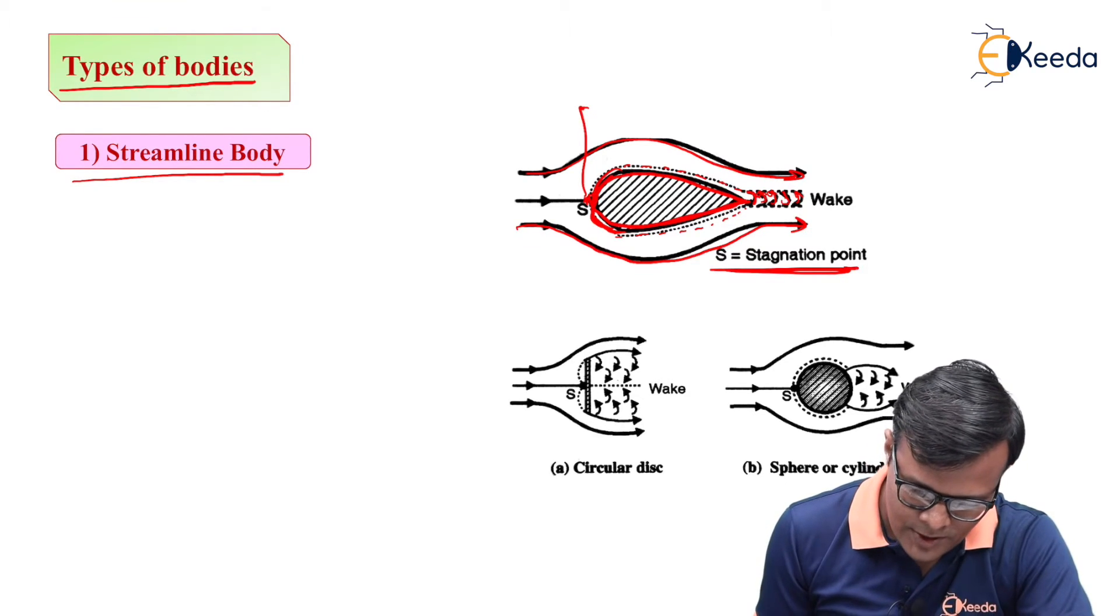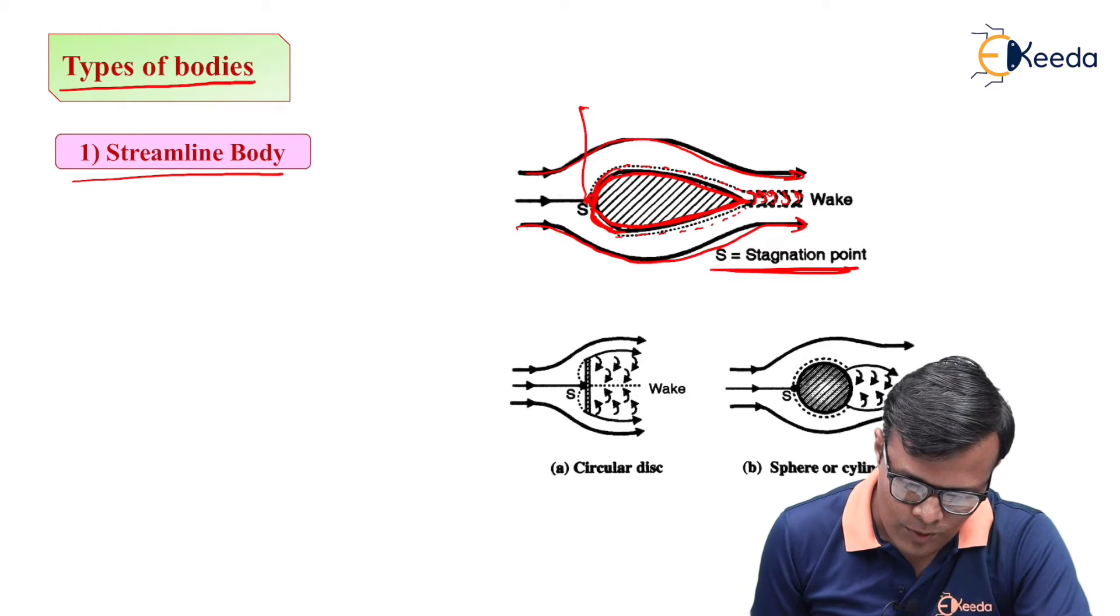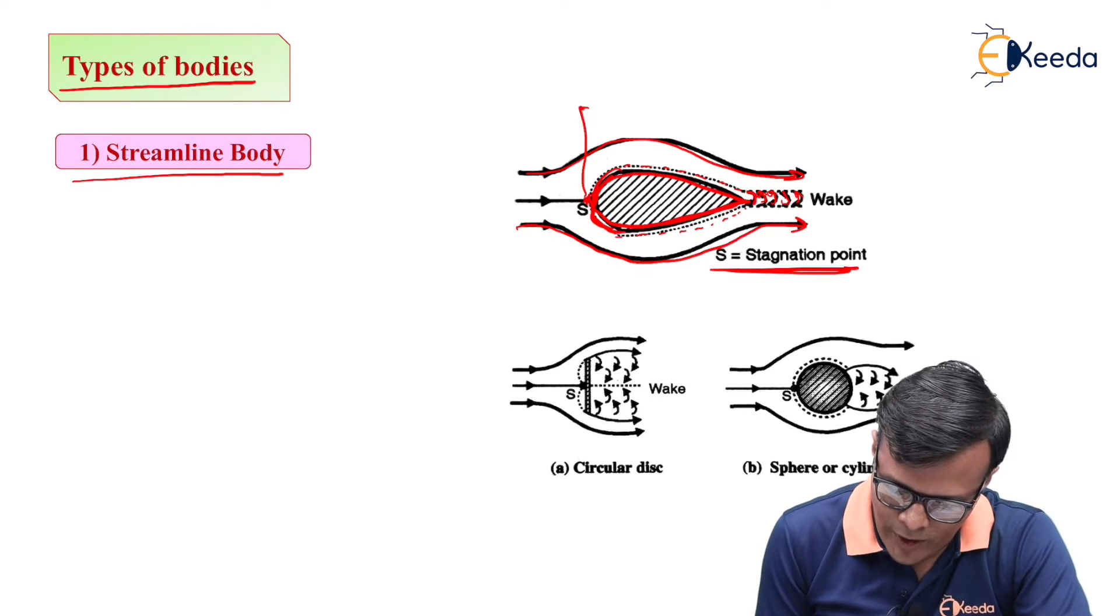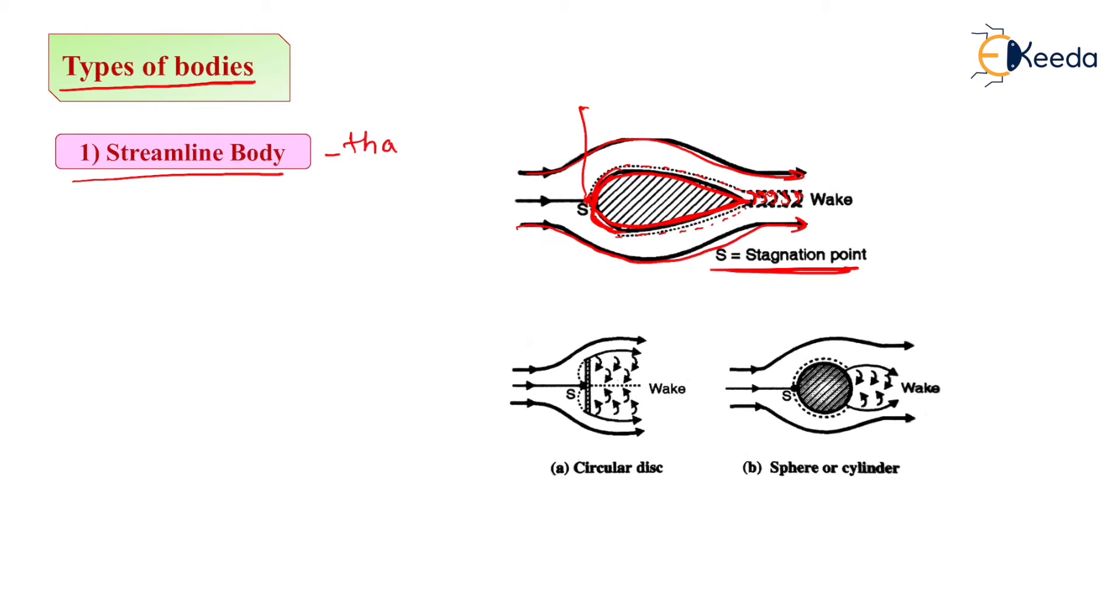S is nothing but the stagnation point. So streamlined body can be defined as the body whose shape coincides with streamlines. Streamlines are the lines of flow of a fluid when body is placed in fluid.